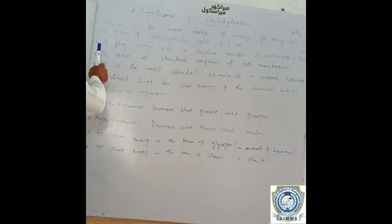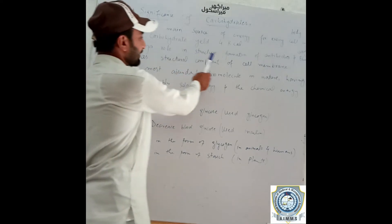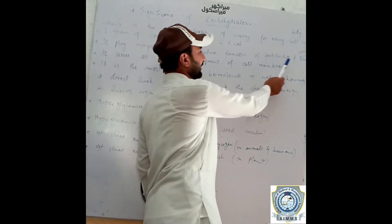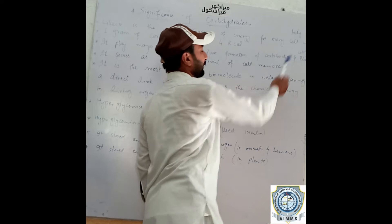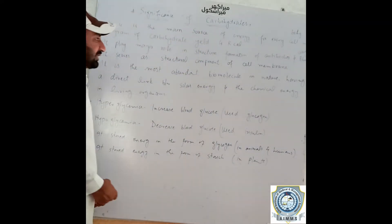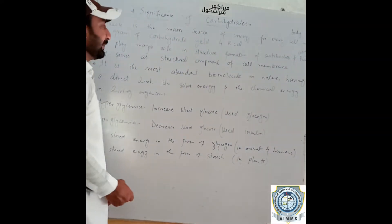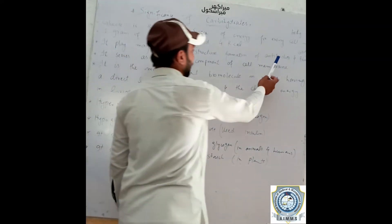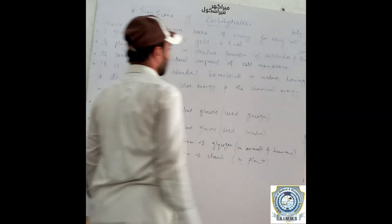First, carbohydrates play a major role in the structure formation of antibodies and blood clotting. The blood clotting process involves antibodies.